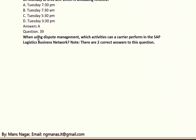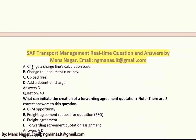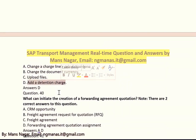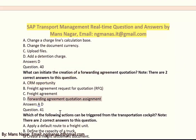When using dispute management, which activities can a carrier perform in the SAP Logistics Business Network? There are two answers. The answer is D, add a detention charge. What can initiate the creation of a forwarding assignment quotation? The answers are A and D: A means CRM customer relationship management opportunity, and D means forwarding agreement quotation assignment.